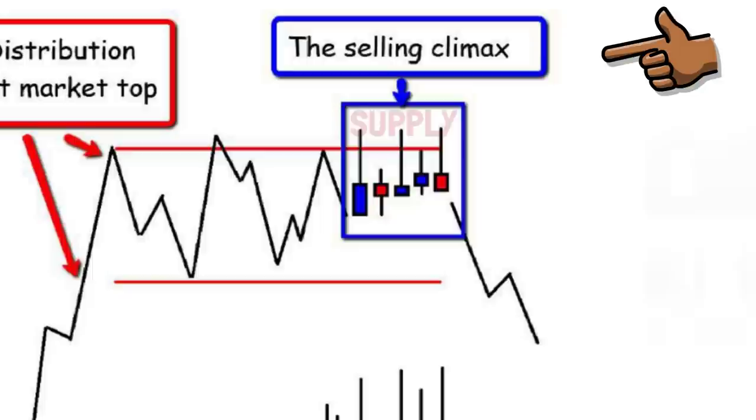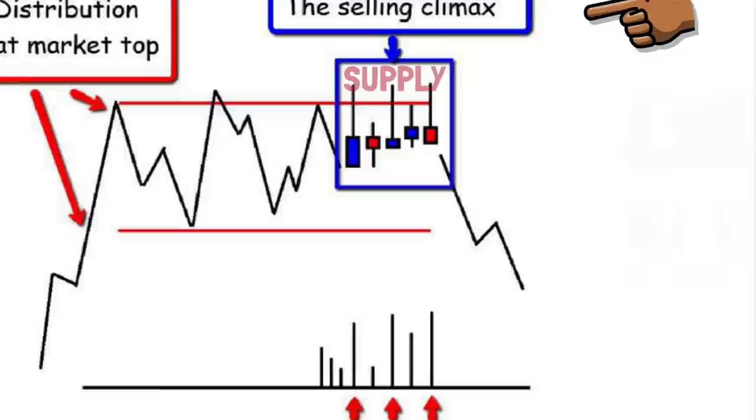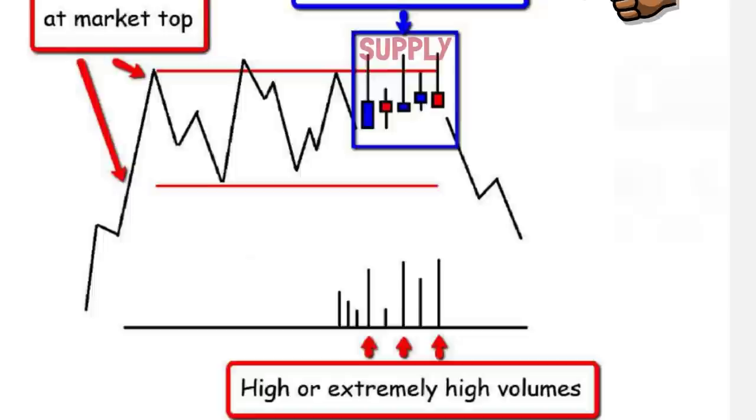The long wicks above the candle bodies represent the area of supply, where sellers are taking charge of the action, pushing prices back down after a test of demand. But remember for this to be meaningful action, we need validation of volume, and below we can see increased volume in relative proportion to the price action, therefore providing validation.